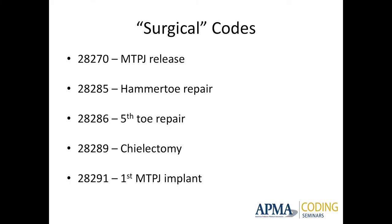28289 is cheilectomy — taking off the bumps of the first metatarsal-phalangeal joint; it includes both sides of the joint, metatarsal and phalangeal. 28291 is cheilectomy with a metatarsal-phalangeal joint implant — so you're cleaning it off, taking part of the base, and putting in either a hemi or total implant.